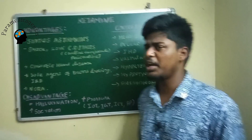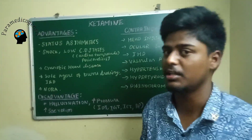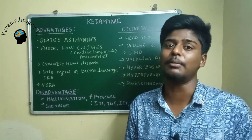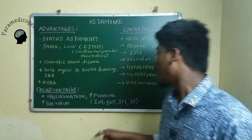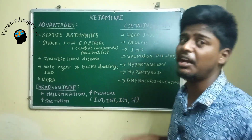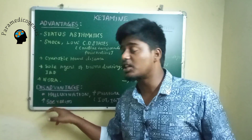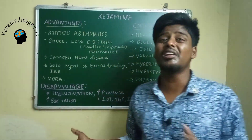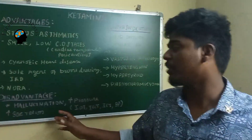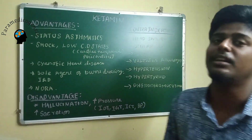The disadvantages of ketamine: the main disadvantage is hallucination — both auditory and visual — which can be prevented by using benzodiazepines like midazolam. It increases all pressures including intraocular, intragastric, intracranial tension, and blood pressure. It also increases secretions, raising the risk of laryngospasm and bronchospasm, which is managed with anticholinergic drugs like atropine and glycopyrrolate.